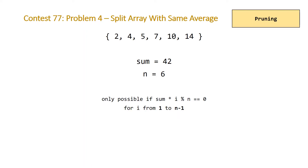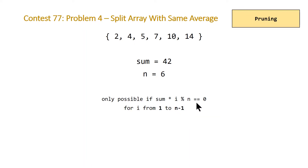Pruning is a technique used to rule out certain cases we don't need to check. We're going to look at the sum of our elements, which is 42, and the number of elements, which is 6. It's only possible to partition our array into two partitions with the same average if the sum times some integer i, modulus n, equals 0 — for values of i from 1 to n minus 1. So if we take sum=42 and n=6, and no value of i yields a modulus of 0, it's not going to be possible to partition the array as required.